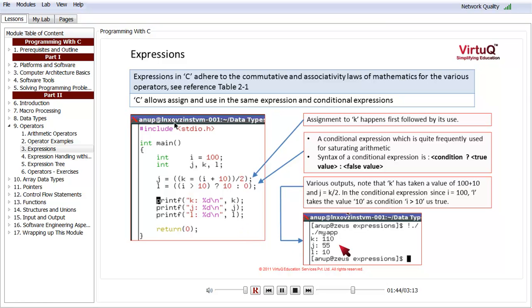The outputs are shown here. Note that the value of k is i plus 10. That is 100 plus 10 equals 110. The reason being that this assignment happened first. They were parenthesis and so they took precedence. After that, the value of j is 55 because that is 110 by 2. And then finally, the value of l evaluates to 10 because i was greater than 10.